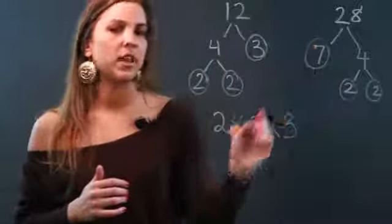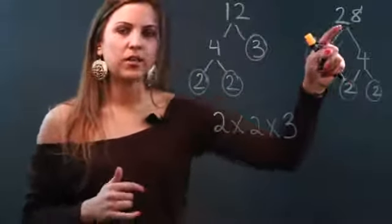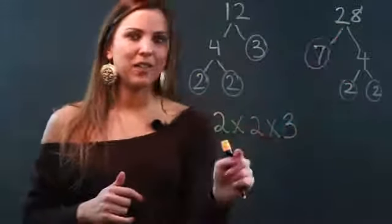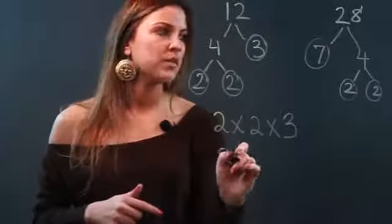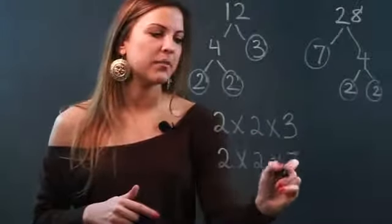And now I'm done. Now when I go to write the prime factorization of 28, I'm going to do it underneath the prime factorization of the number 12. So this is going to be 2 times 2 times 7.